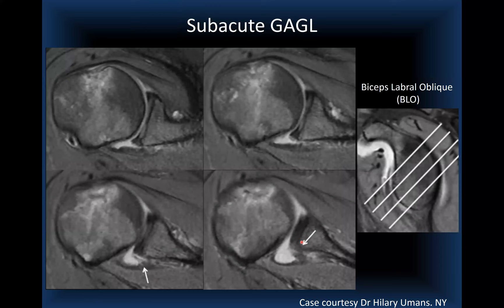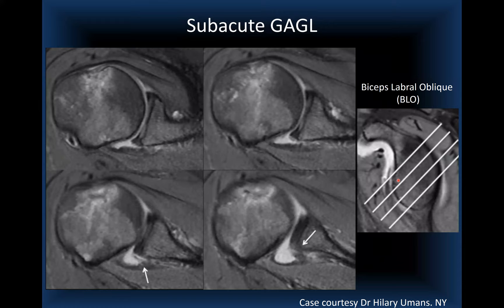On straight axial images the labrum is intact and the injury is isolated to the capsule and glenohumeral ligament at the glenoid insertion. Dr. Hillmans' group performs a BLO sequence — the biceps labrum oblique — with imaging planning similar to ABER but without repositioning the patient. In the BLO images, you can see the complete soft tissue avulsion of the anterior band of the inferior glenohumeral ligament and capsule with a normal-looking labrum — a true GAGL.